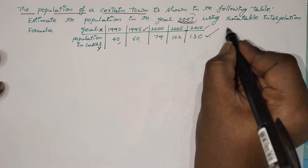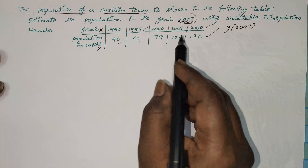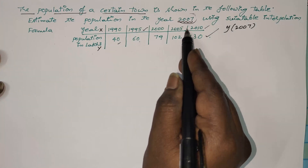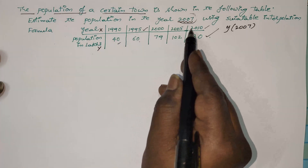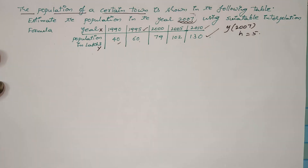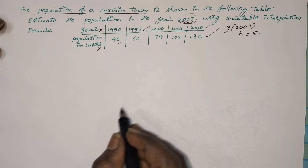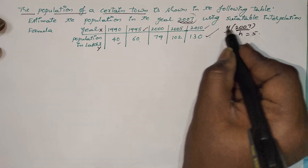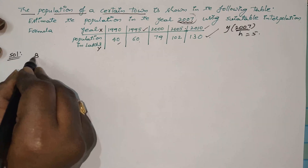It is enough to find out the y value at 2007. Clearly 2007 is at the end of the data, and we also observe that all years are separated by equal difference — h is equal to 5, for every 5 years you get the data. So Newton's backward interpolation formula is the suitable formula because the point 2007 lies at the end of the data. First of all, consider the backward difference table.